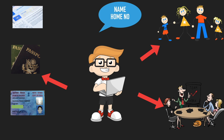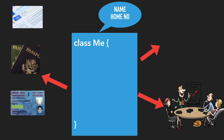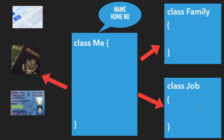In Java, everything we talk about is objects, and objects come from classes. Let's convert this happy-looking guy into a class — let's call it 'class Me.' Similarly, let me convert the family picture to a Java class called 'class Family,' and let's treat my job as a class called 'class Job.'